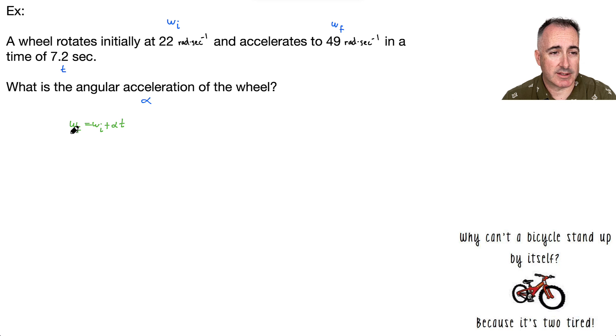Okay, so let's put in everything we know here. Actually, maybe we'll just try to solve for alpha algebraically here. So first, if I want to get alpha by itself, what should I do? I should move my omega i over. So that means I have omega f minus omega i. That's going to equal alpha times t.